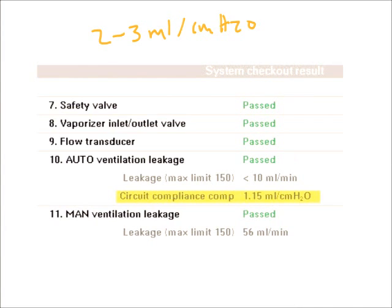And what this means is, basically, we can think of this for every centimeter of water above your set PEEP, you're going to lose 2 to 3 milliliters of tidal volume. Or in this case, based on the circuit compliance, you're going to lose 1.15 milliliters.